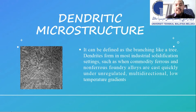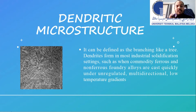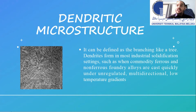This is the dendritic microstructure. The main thing we are studying in this project is the dendritic microstructure. Dendritic microstructure can be defined as branching like a tree. The dendritic form is the most common industrial solidification setting, occurring when ferrous and non-ferrous alloys are cast quickly under unregulated, multi-directional, low temperature gradient conditions. This is the result most commonly found in industrial manufacturing, but we aim to achieve the opposite.